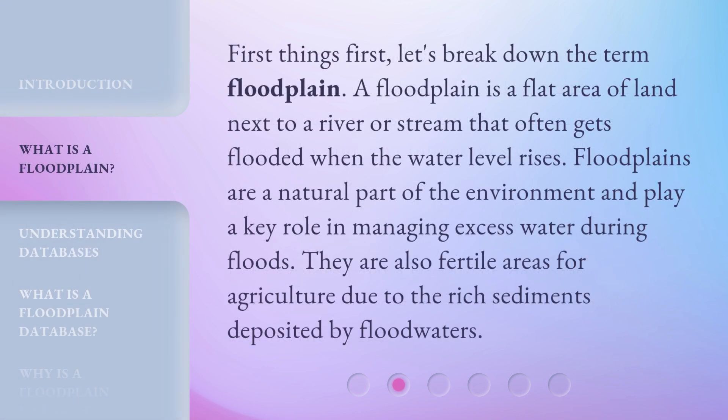First things first, let's break down the term floodplain. A floodplain is a flat area of land next to a river or stream that often gets flooded when the water level rises. Floodplains are a natural part of the environment and play a key role in managing excess water during floods. They are also fertile areas for agriculture due to the rich sediments deposited by floodwaters.